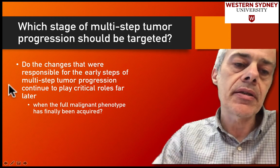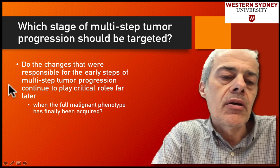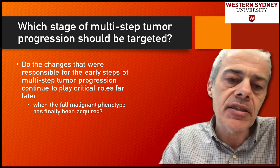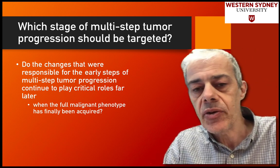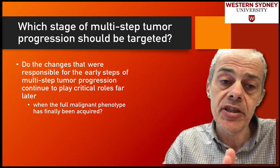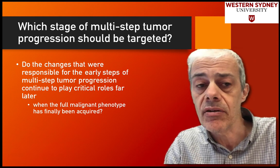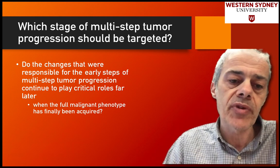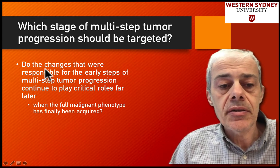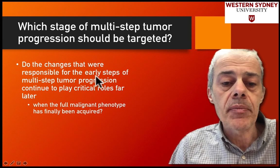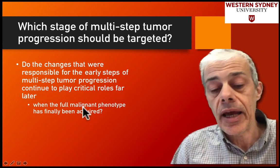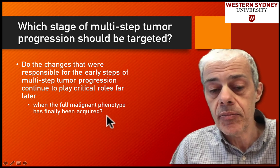The next question was: I know these pathways are perturbed in cancers — some early on, some late. Should I be targeting pathways perturbed early on or ones perturbed later? Do the changes that occur early in multi-step tumor progression continue to play a role later on in the progression of the cancer?